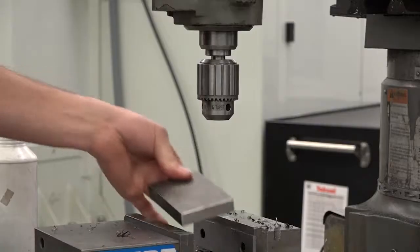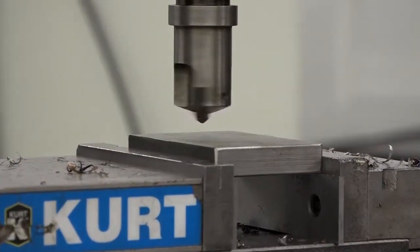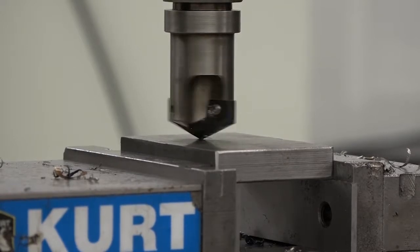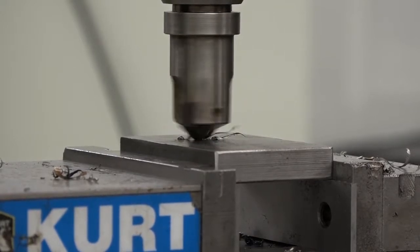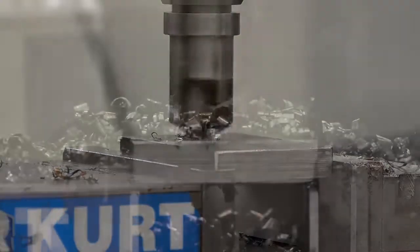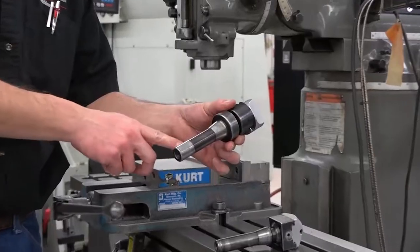Before using the offset boring head, you must prepare the workpiece. Begin by drilling a hole where you need the bored hole to be. The diameter of your drilled hole should be roughly 1/16th of an inch smaller than the final diameter of the bored hole. Once you've drilled your hole, you can set up the boring head.